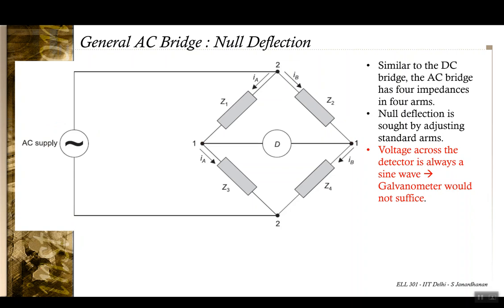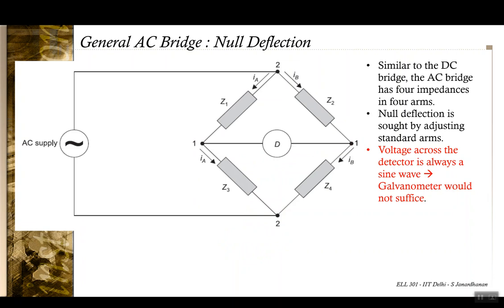There is one very important difference: the nature of the signal across the two terminals where the detector is connected. In a DC circuit we had a galvanometer connected here, the current was being measured, and we wanted the current to go to zero — meaning the bridge was in balance condition.